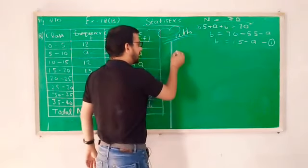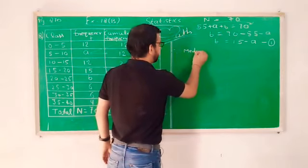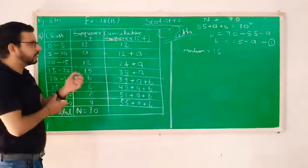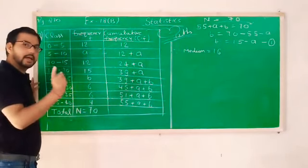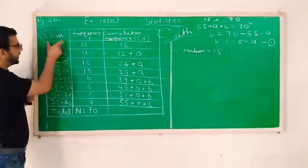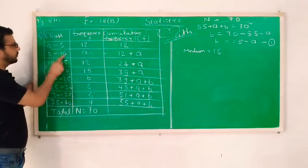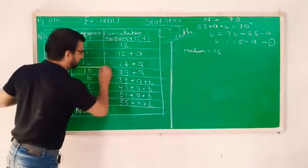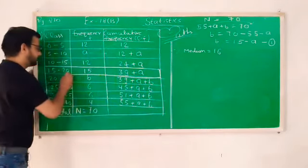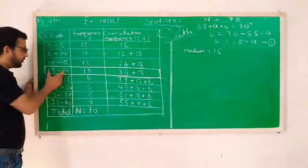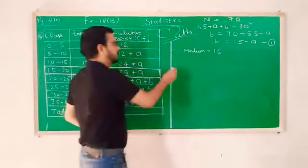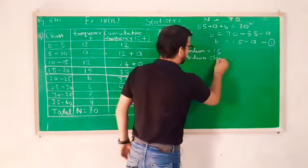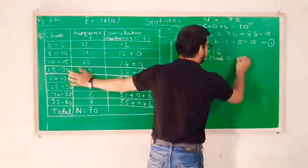Now, the question says that your median is 16. So median is 16. We need to check that median falls in which median class. So what is median class? Class interval. This is the class. 16 is coming in which class? 0 to 5, 5 to 10, 10 to 15. Will it come in 15? 15 to 20. Will it come in this? So we highlight this block. So your 15 to 20 becomes what? Median class.